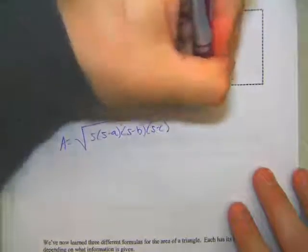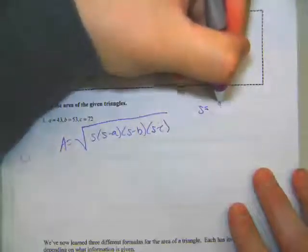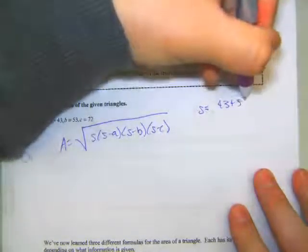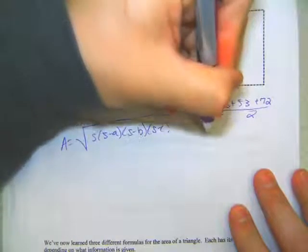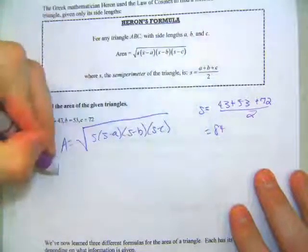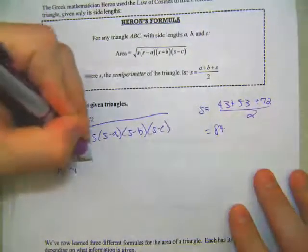So let's find s first. s would be 43 plus 53 plus 72 divided by 2, which I think would give you 84. So that means the semi-perimeter is 84.